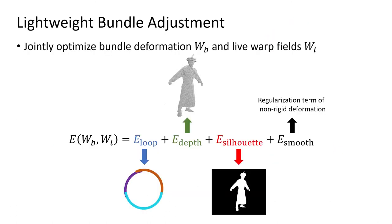So, we jointly optimize the bundle deformation and live warp fields. In the formulation, there are four terms. The loop term guarantees that the partial scans should construct a loop in reference frame. And the live depth and silhouette terms make sure that the partial scans should fit with depth point clouds and silhouettes in live frames. The smoothness term is the regularization term of non-rigid deformation.